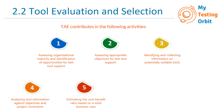Number five is estimating the cost-benefit ratio based on a solid business case. A business case is a document which states the potential benefits of a project and acts as a basis for stakeholder decision. Whenever you are introducing a new tool, you will create a business case presented to stakeholders stating its pros and how it will be useful for the company or a specific project.